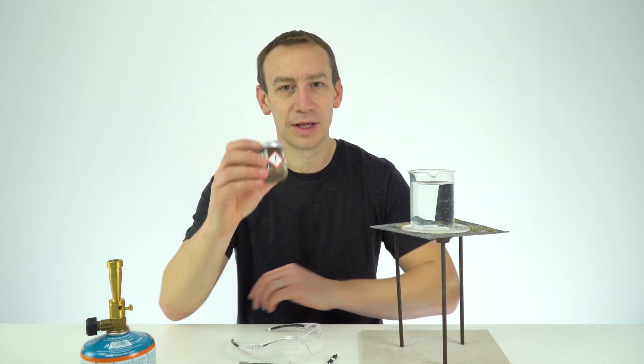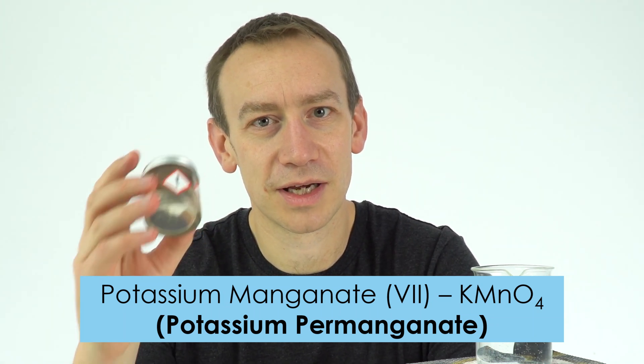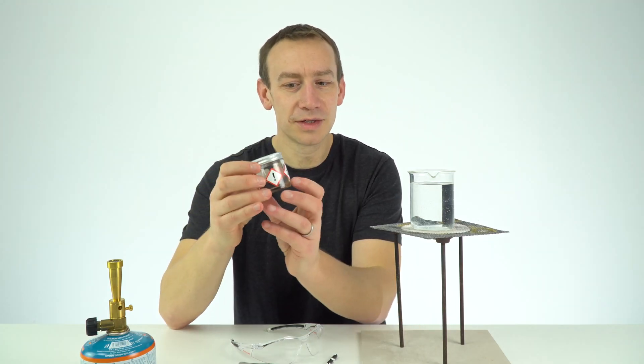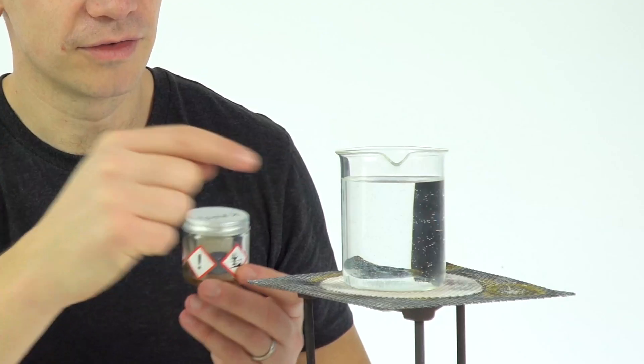We also have this chemical here called potassium manganate 7, sometimes also known as potassium permanganate. All this is doing is acting as a dye so we can see where the water is actually moving inside this beaker.